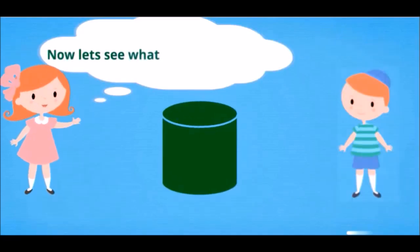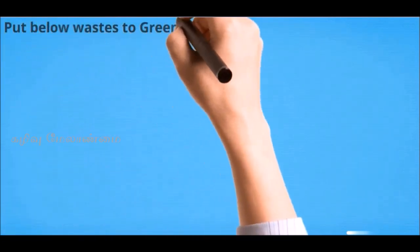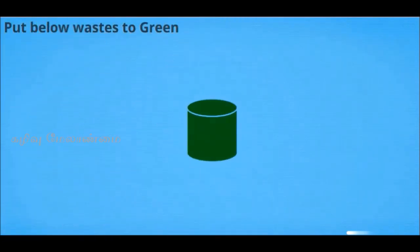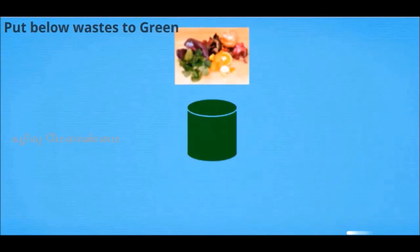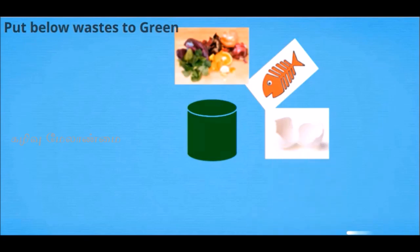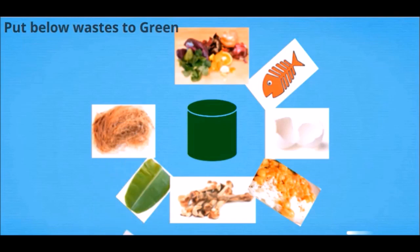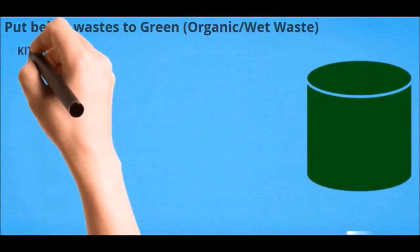Now let's see what goes to the green bin. Put the below wastes into the green bin: vegetable and fruit wastes, fish, eggshells, rice, bones, leaves, fibers, and leaf plates. Now let's see the full list for green wastes.